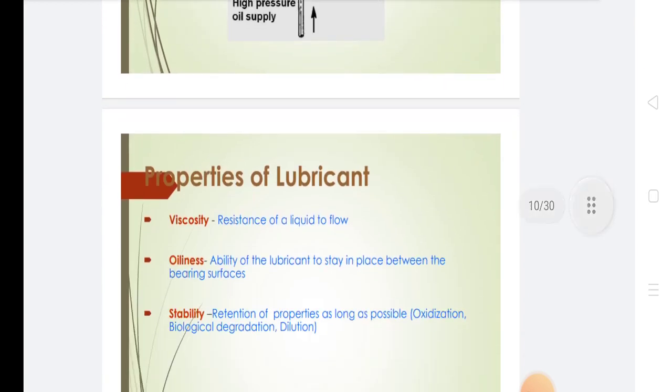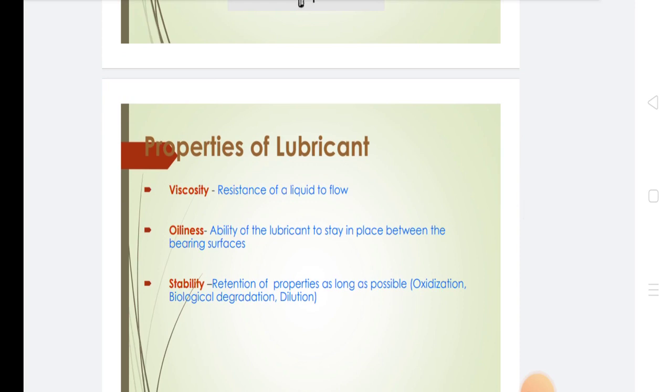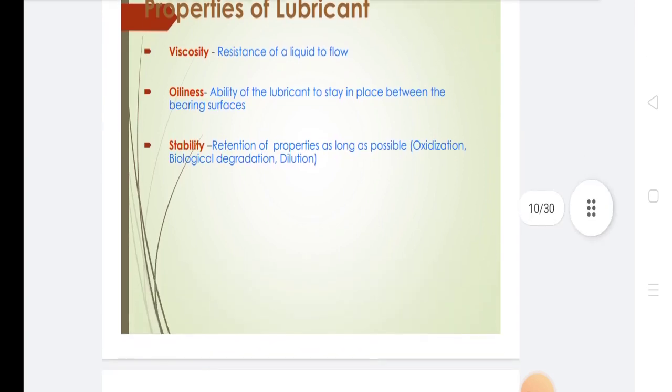The properties of lubricant include viscosity (resistance of a liquid to flow), oiliness (the ability of the lubricant to stay in place between the bearing surfaces), and stability (retention of properties as long as possible, resisting oxidation, biological degradation, and dilution).